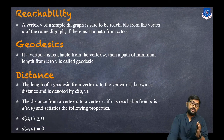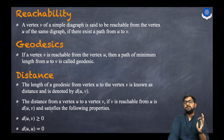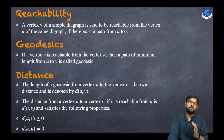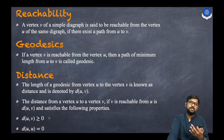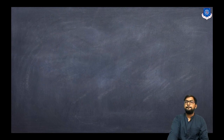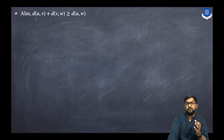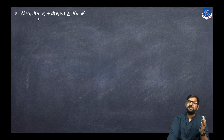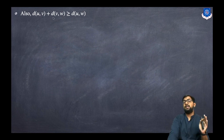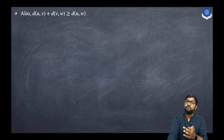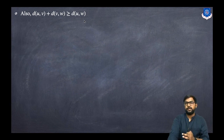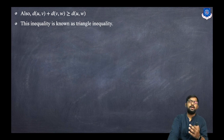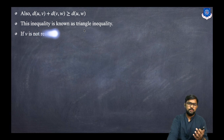The distance satisfies the following properties. First, d(u, v) is greater than or equal to zero — the distance between two vertices cannot be negative. Second, d(u, u) equals zero — the distance from a point to itself is zero. Third, d(u, v) plus d(v, w) is always greater than or equal to d(u, w). This is known as the triangle inequality.